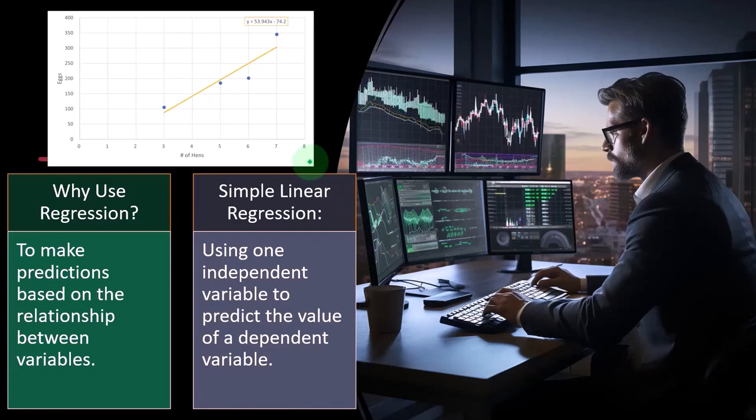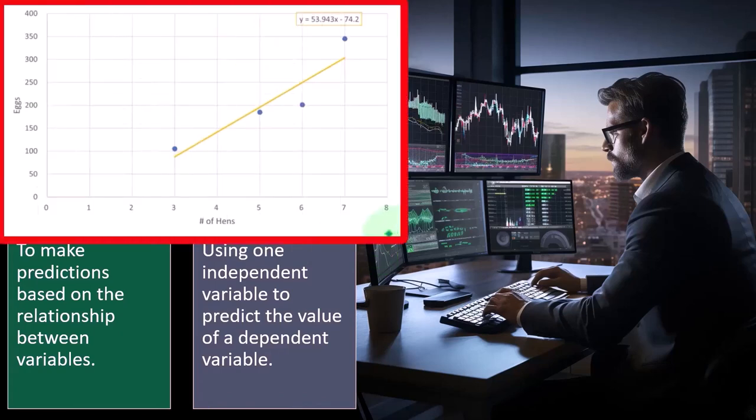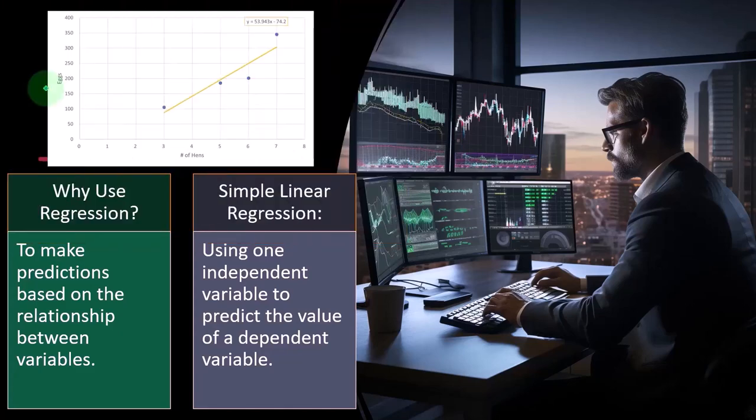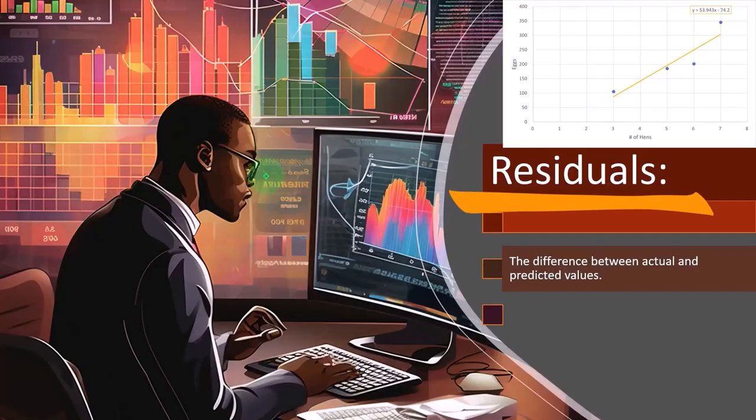So then we have a simple linear regression using one independent variable to predict the value of a dependent variable. That's what we're going to focus in on in our practice problems, where we have the independent variable in this case being the hens, which is going to give us the predictive power over how many eggs are going to be produced basically in this example.